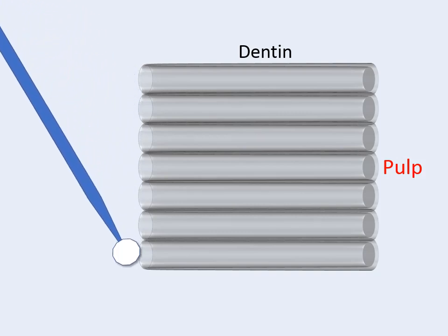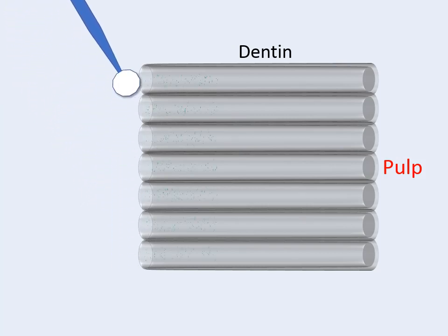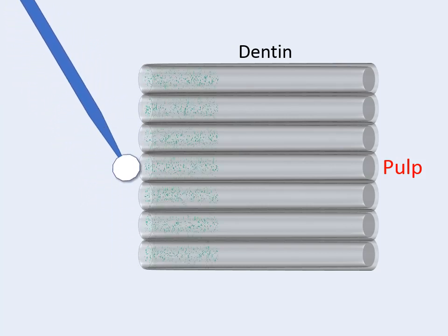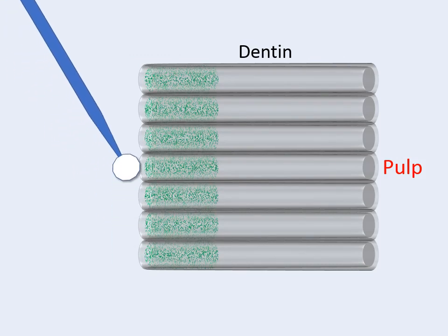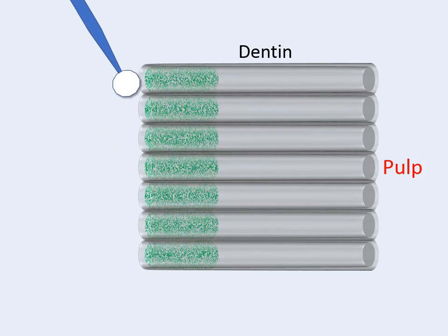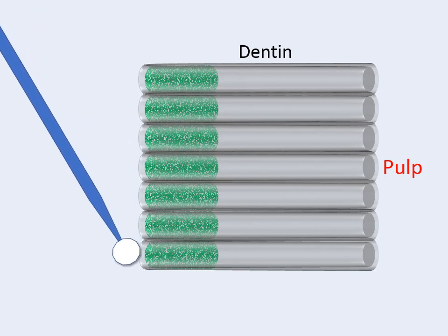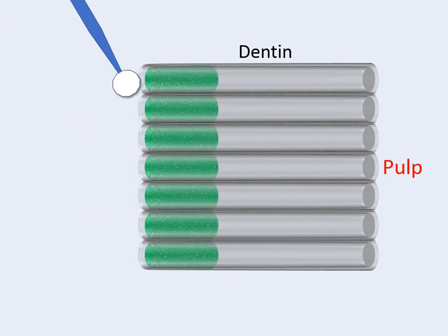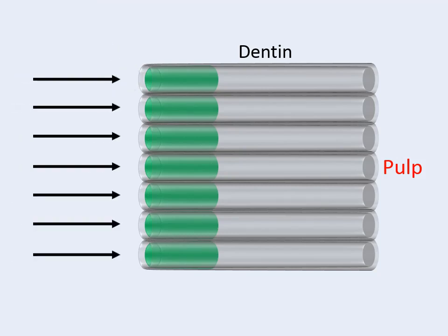Let's take a look at how GLUMA works to decrease a patient's sensitivity. By applying GLUMA on the exposed dentinal tubules, it fills in the openings of these tubules. By doing this, the passage of stimuli through the tubules is decreased and results in decreased sensitivity.